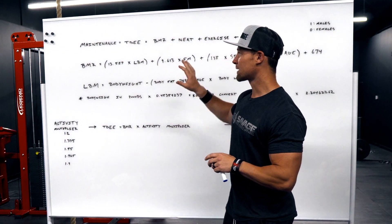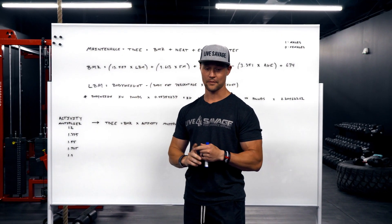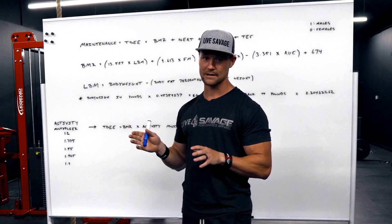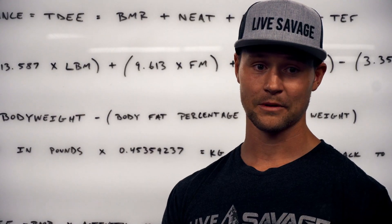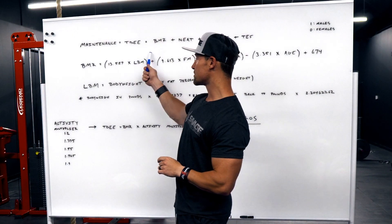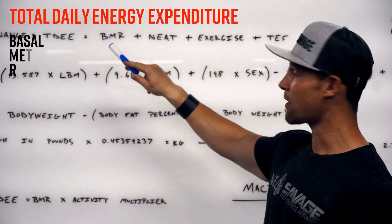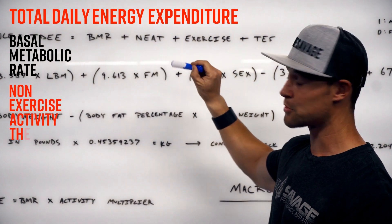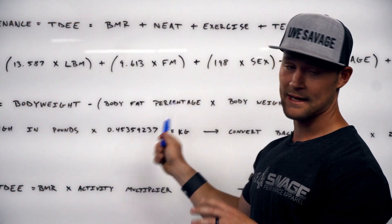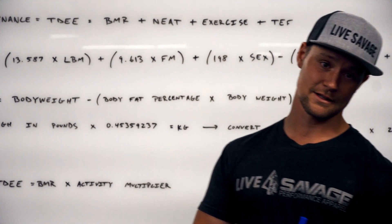All right, so real quick before we dive into the specifics, I want to talk about what you see behind me here. We've got our maintenance intake. Before you can know where you're going, you have to know where you're starting. Before you can know what your macros should be for building muscle or losing body fat, you need to know what your maintenance intake should be. This is a calculation back here. Ideally you would know your maintenance intake simply by tracking for a significant period of time and seeing where your body starts to level out. But if you don't know what that is, we can use this calculation. So maintenance intake is your TDEE, total daily energy expenditure, which is your BMR, basal metabolic rate, plus NEAT, non-exercise activity thermogenesis, plus exercise, plus TEF, the thermic effect from the food you're eating.